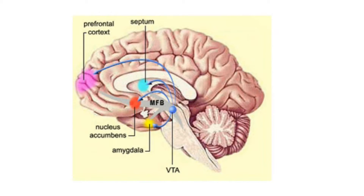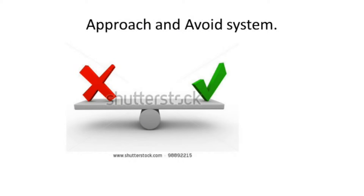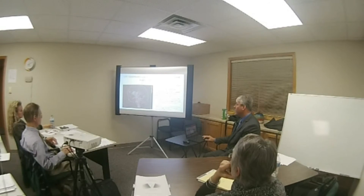We have the frontal lobe where we think about things. The amygdala sends surges of adrenaline to the frontal lobe, which suppresses frontal lobe activity. The reward activation system sends surges of dopamine, which also suppresses frontal lobe activity. We also have an approach and avoid system — it turns out the right frontal lobe is the avoid channel and the left is the opportunity channel: doom channel versus opportunity channel.